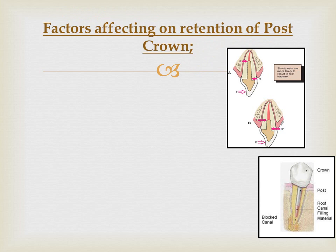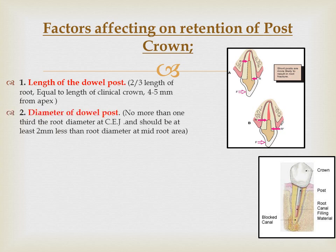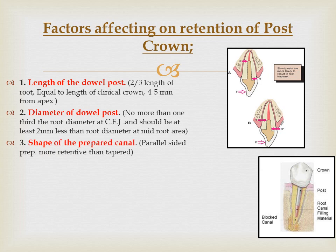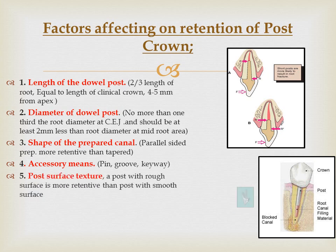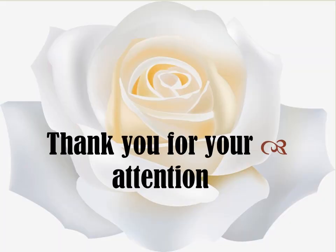Factors affecting retention of the post crown are: number one, length of the dowel post; number two, diameter of the dowel post; number three, shape of the prepared canal; number four, accessory means; and number five, post surface texture. Thank you for your attention.